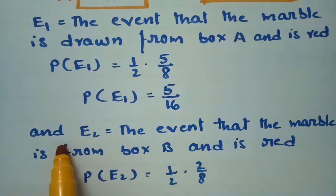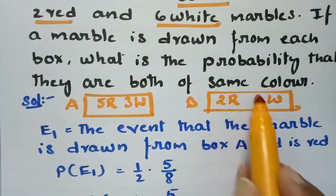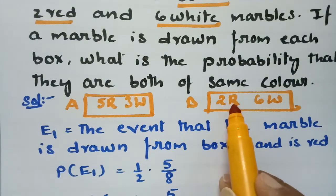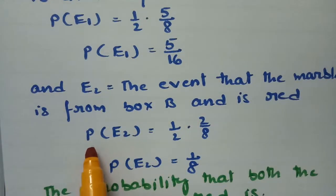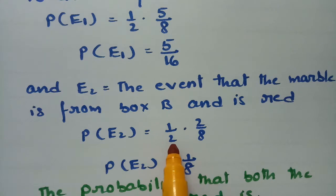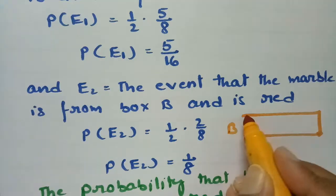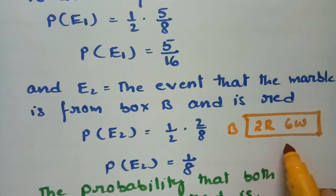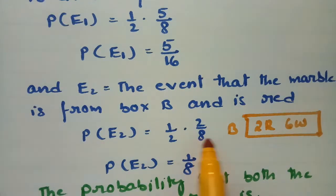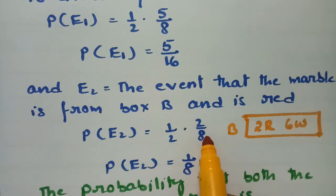Next, event E2: the event that the marble drawn from box B is red. Box B has 2 red and 6 white marbles, total 8. The probability is half — chance of choosing box B — multiplied by 2C1 over 8C1, which is 2 over 8. So P(E2) = 1/2 × 2/8 = 1/8.